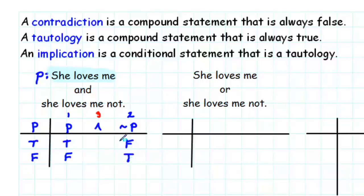And then finally, we'll form the conjunction of these two columns. Now, remember that conjunction is only true when both parts are true. In this case, we have true false, that results in false. And false true also results in false.